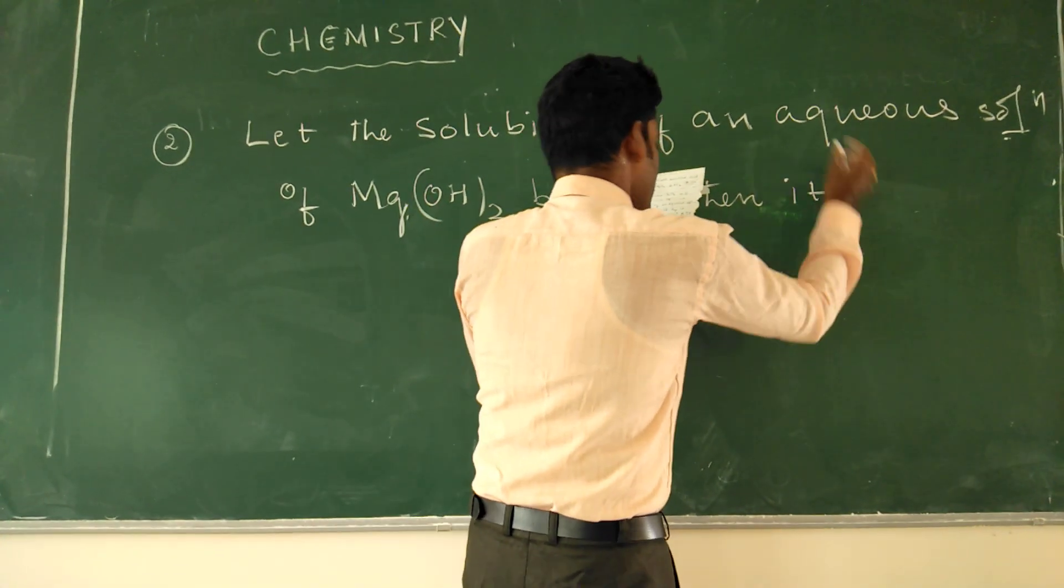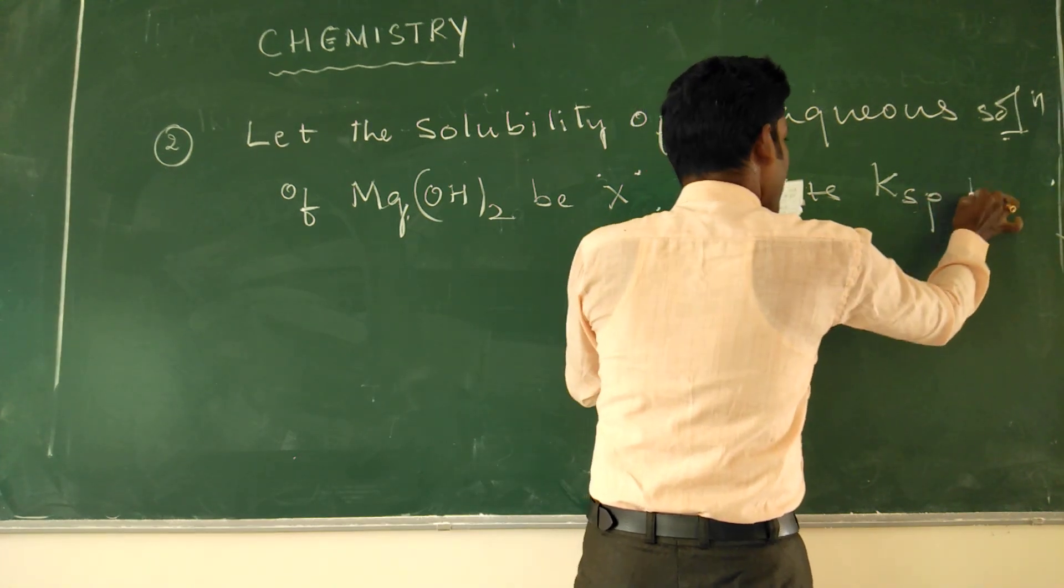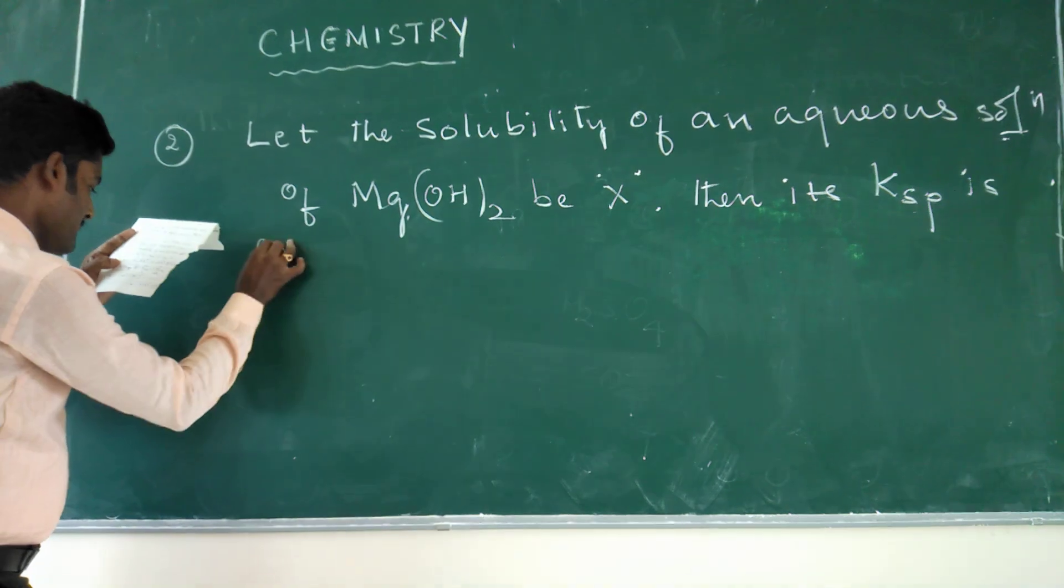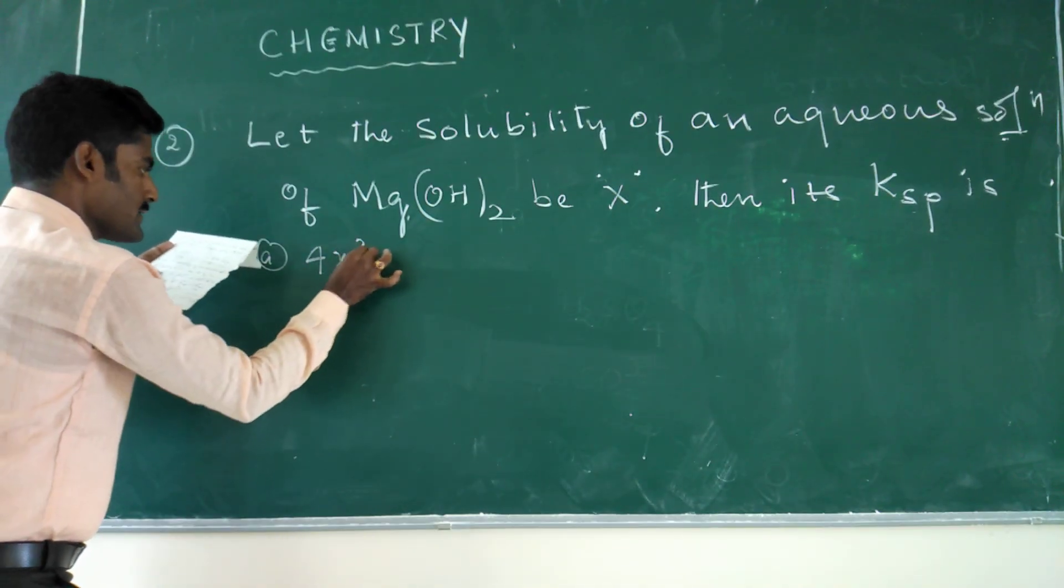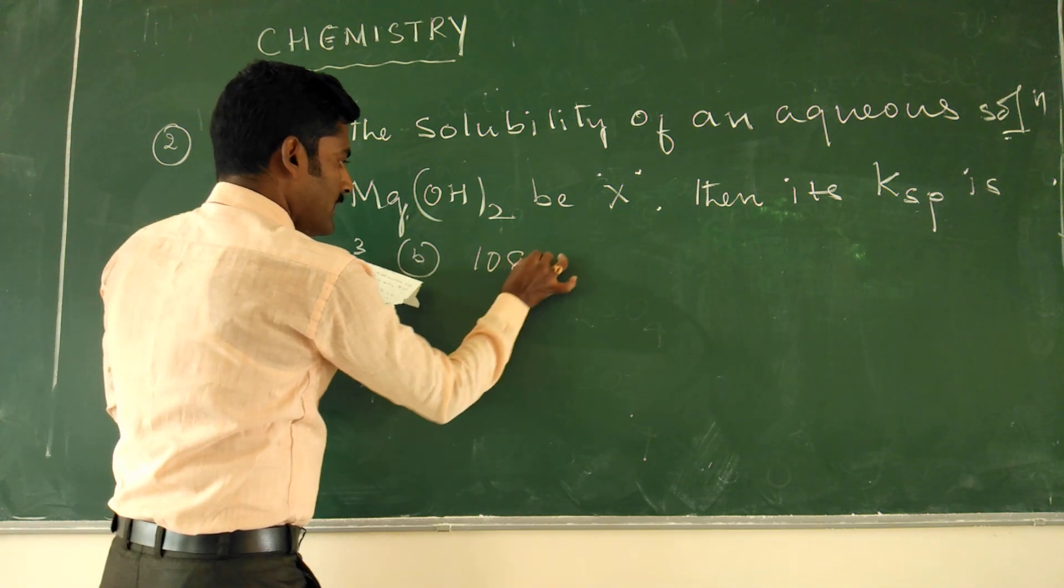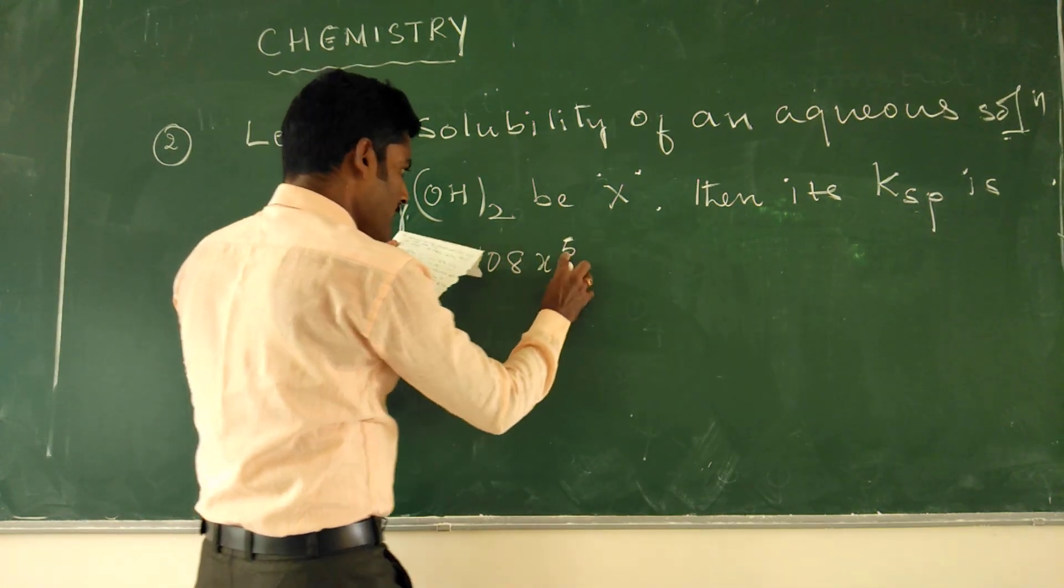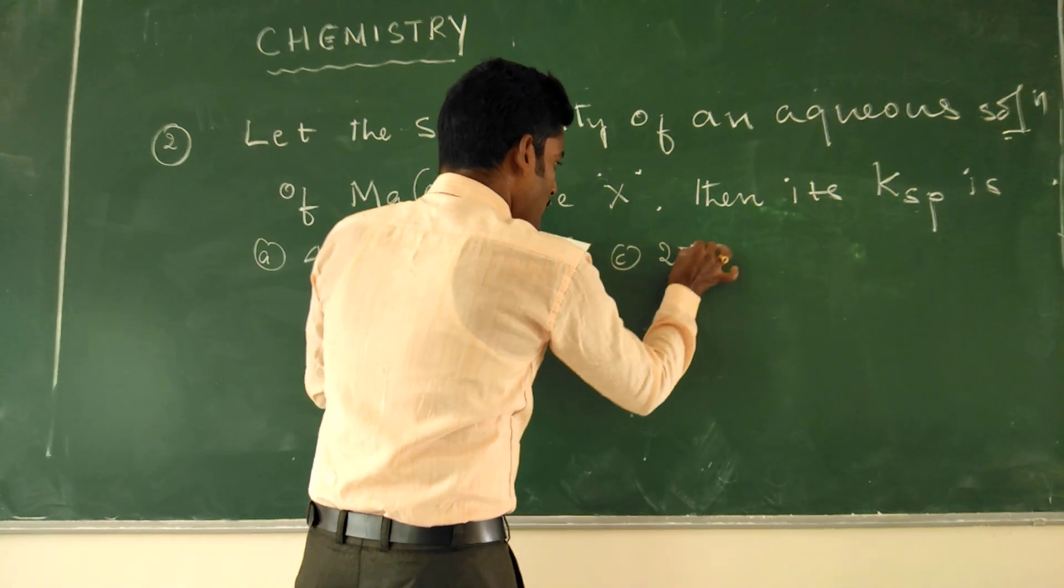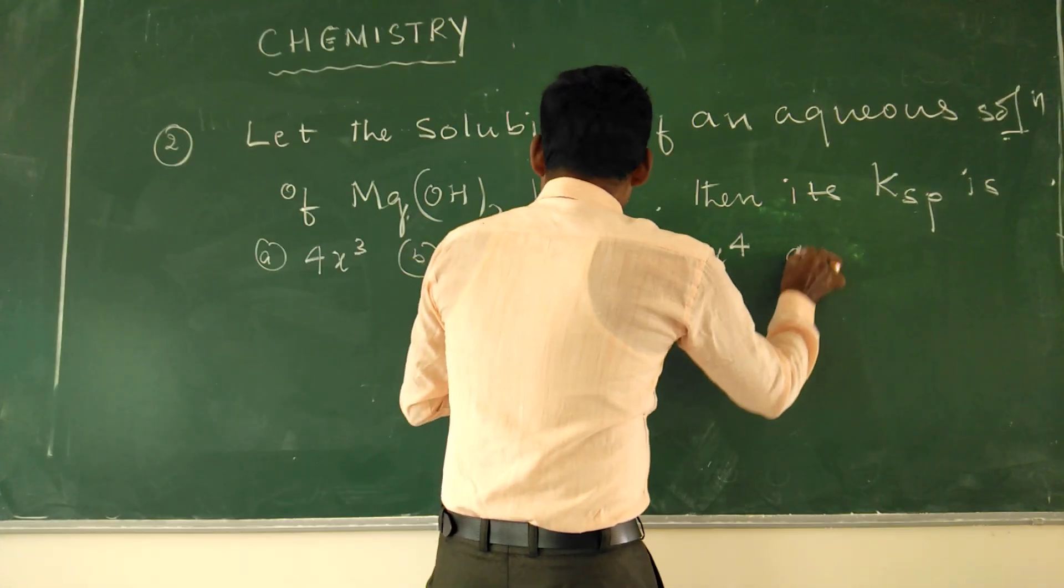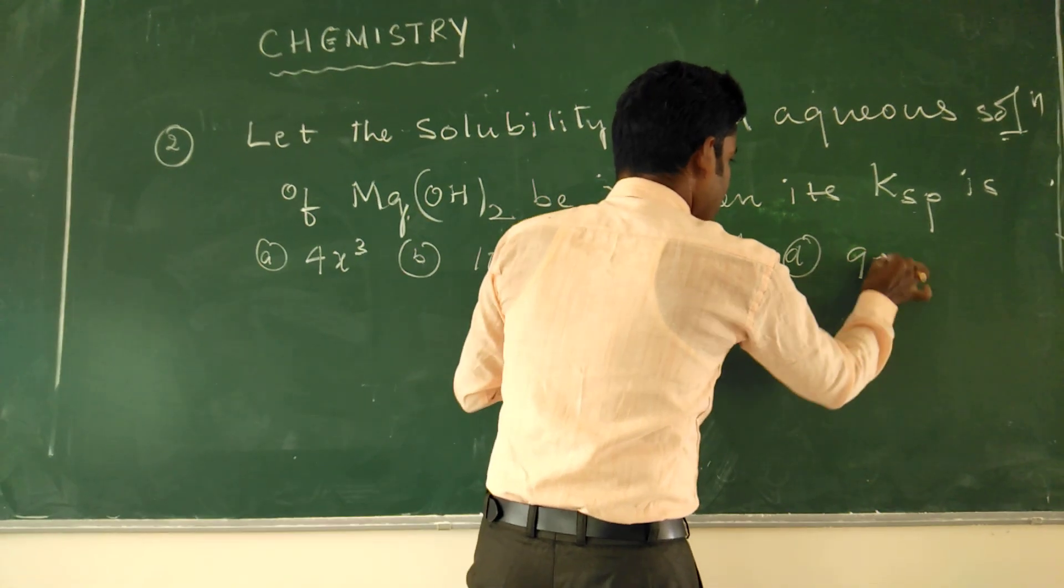Then, then its solubility product KSP is: option A, X cube; option B, 1/8 X power 5; option C, 27 X power 4; option D, 9X.